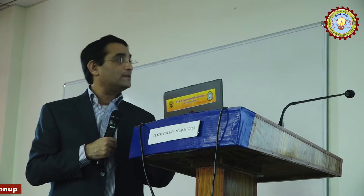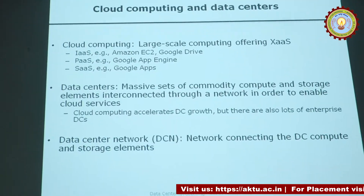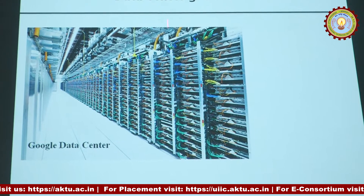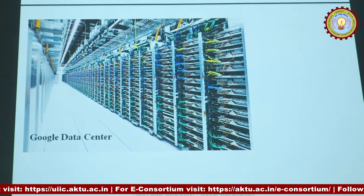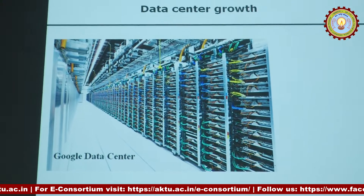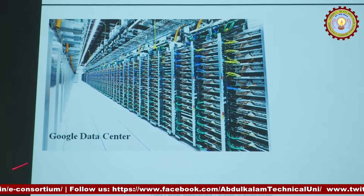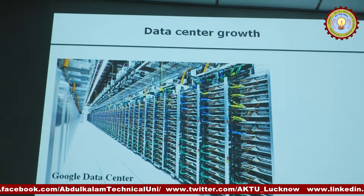This talk is going to focus on how to architect a data center network that can scale to very large sizes. This is an example of a very small part of one of Google's data centers. There are lots of rows of racks. Each rack contains some 30-odd servers — blade servers. There are probably hundreds of lines of racks in a big data center location, representing enormous compute power.